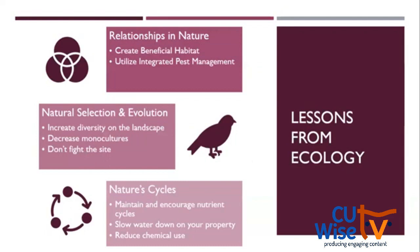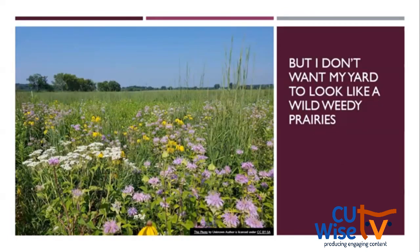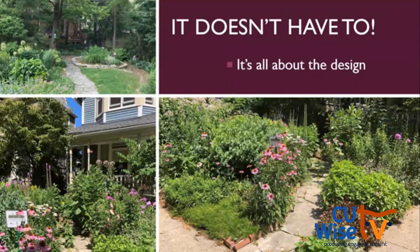Those are the lessons from nature cycles — we're encouraging these cycles, maintaining them, slowing down the water, and reducing chemical use. I've talked for about 55 minutes and I want to spend a few more minutes showing you what this physically looks like. You may be thinking you don't want your yard to look like a native ecosystem, a prairie or a forest — but the difference is all in the design. There are lots of different ways to implement classic design principles with native landscapes and these ecological lessons.